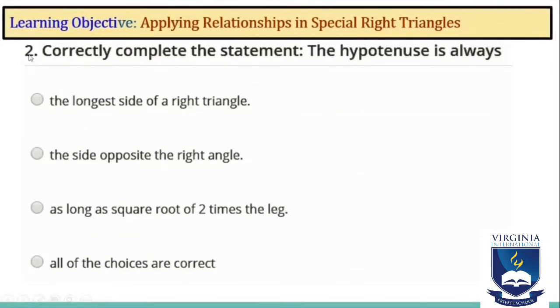Question number 2: Correctly complete the statement. The hypotenuse is always the longest side of a right triangle, the side opposite the right angle, as long as square root of 2 times the leg, or all of the choices are correct. The correct answer is that all of the choices above are correct.